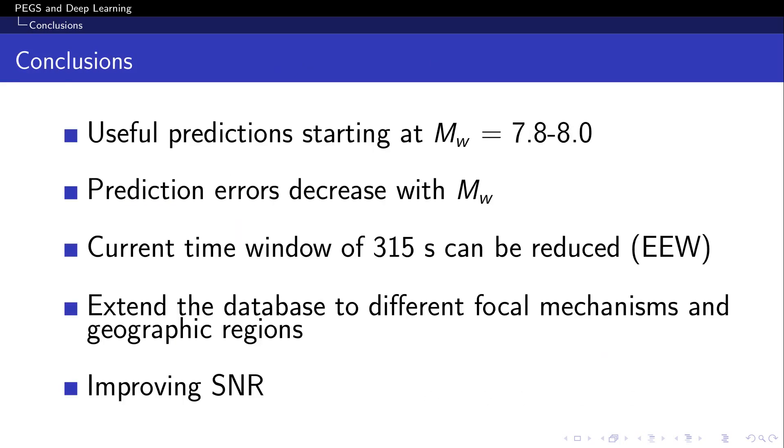So, in conclusion, we have shown that our deep learning model is able to estimate magnitudes for shallow dip slip events, large events, above roughly 7.8 to 8.0. We have shown that prediction errors decrease as a function of magnitude, and this could play a critical role in the context of early warning systems, helping to overcome the current limitations of point source algorithms for early magnitude estimation.